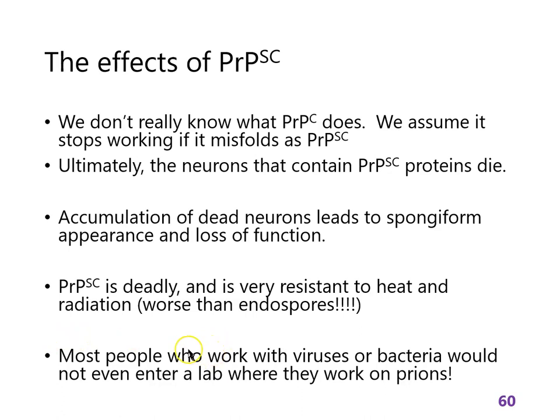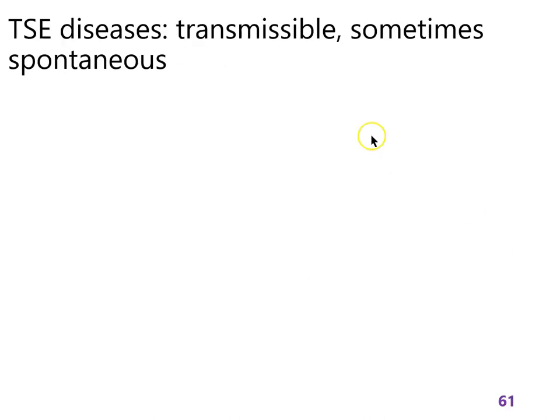Most people I know who work with prions are genuinely afraid of them. Someone I knew worked in a BSL-3 lab on tuberculosis, had to wear a space suit to do her research, and she would not go near the guy who worked with prions. We're bad people. But we're very much afraid of things like this. Some of these diseases are spontaneous and some are transmissible. For something like Creutzfeldt-Jakob disease, we don't know how the initial flip happens, but for a lot of diseases we know that you get it from something else that already had it.